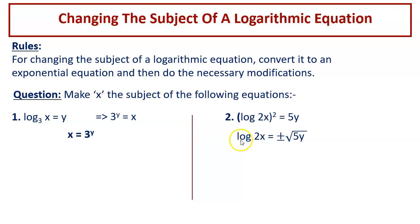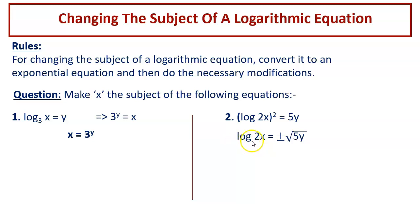When you see LN instead of LOG, the base is E — that is the natural logarithm. We will come to natural logarithms later. For now, it is just LOG, and with the subscript missing, the base is 10.